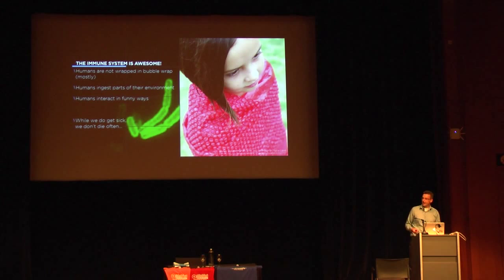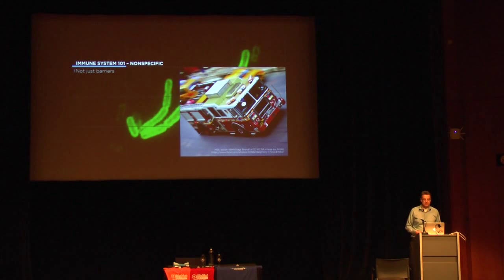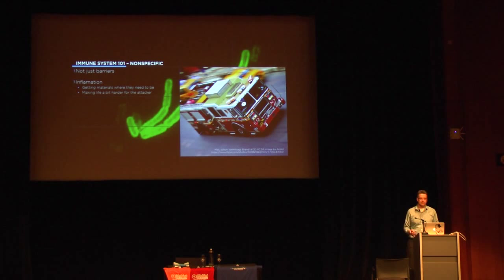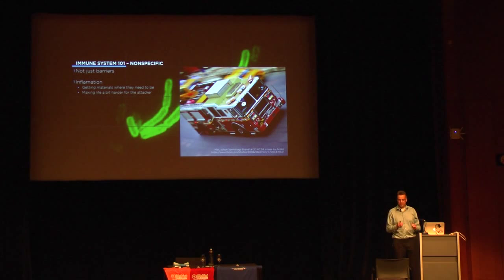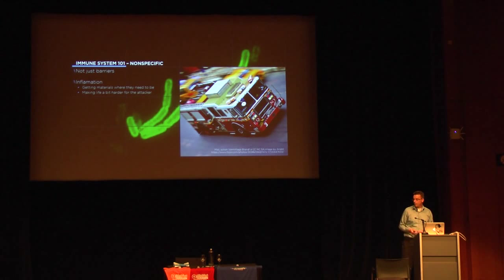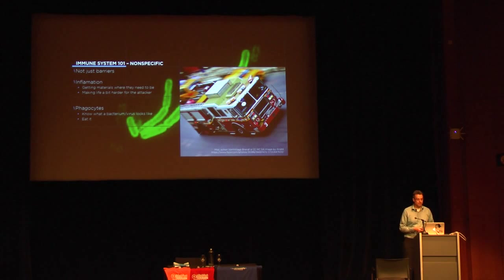It's not just the barriers — another part is our incident responders. There's an immediate first response: inflammation. The minute you have a wound it gets inflamed, the temperature rises, there's increased blood flow — a mechanism to get materials there to repair the problem and make it harder for the attacker. Contrary to the Star Trek myth, a fever doesn't get rid of a virus, it just slows it down. Then the real firefighters come in: phagocytes — a specific kind of white blood cell that has a general idea of what a virus or bacteria looks like and goes to fix it.